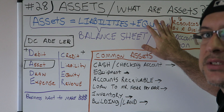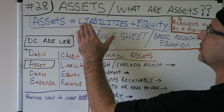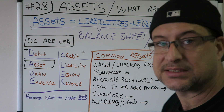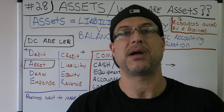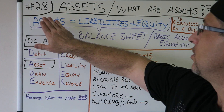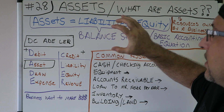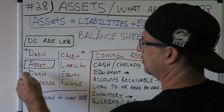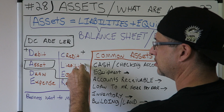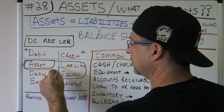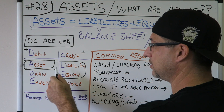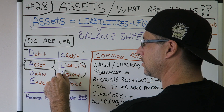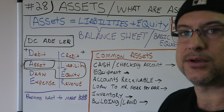Assets equal liabilities plus equity — that is the balance sheet. So next video we're going to do liabilities, and after that we'll do equity. Assets equal liabilities plus equity is the balance sheet, and that's why we're covering these first. This DC AIDLeR always, always equals — there's the balance sheet right in DC AIDLeR.